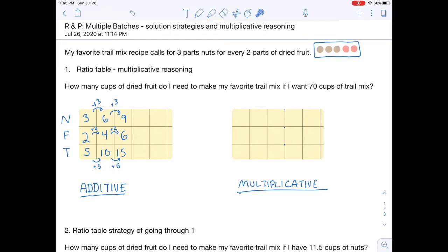If I started with the previous strategy of using additive reasoning with a table, I would have put nuts, fruit, and total with the original ratio three to two, added together to get five total cups. I can quickly see that my total is nowhere near 70. It's going to take a whole lot of columns to get to 70, so I want a more efficient strategy.